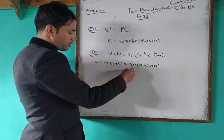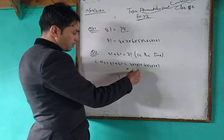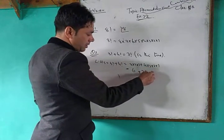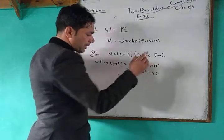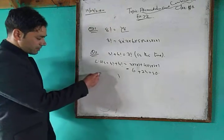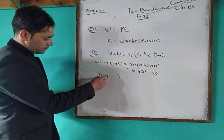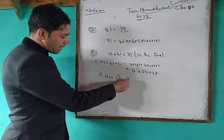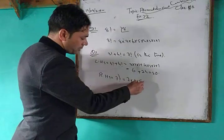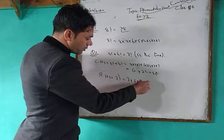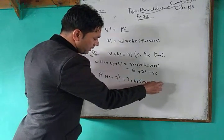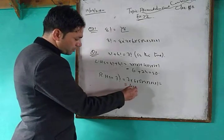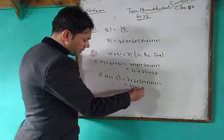So LHS = 6 + 24 = 30. Now for the RHS, 7 factorial equals 7 × 6 × 5 × 4 × 3 × 2 × 1, which gives 42 × 20 × 6, a much larger number.